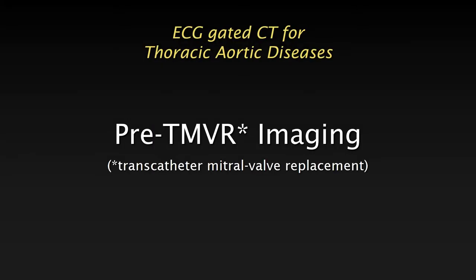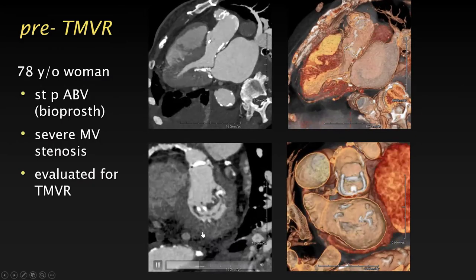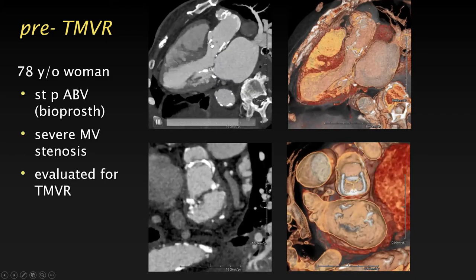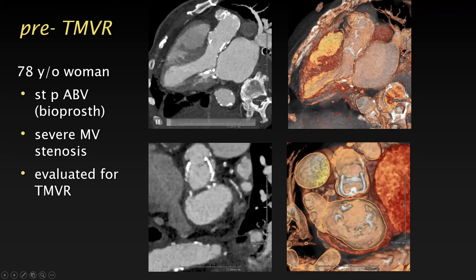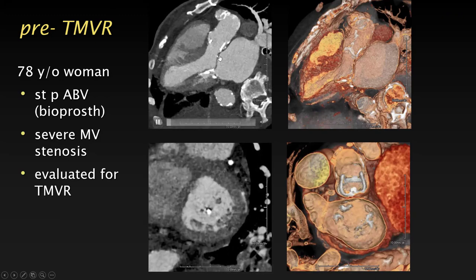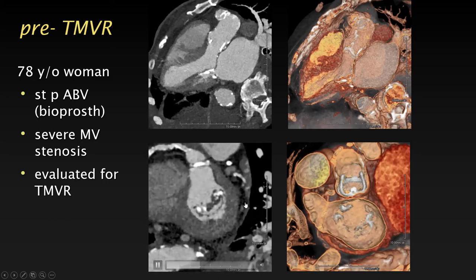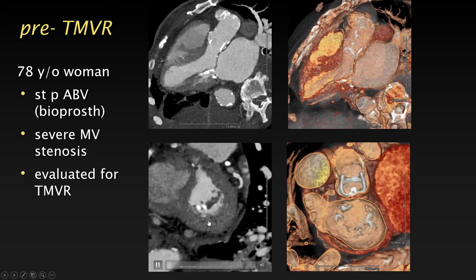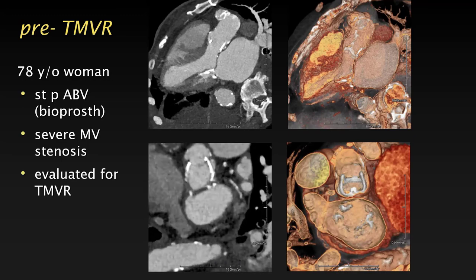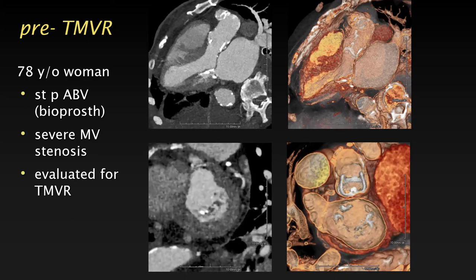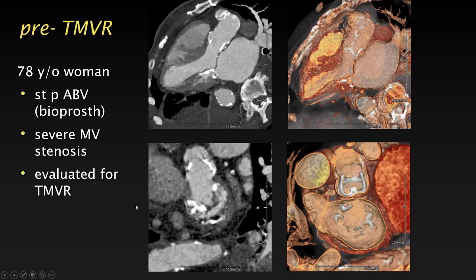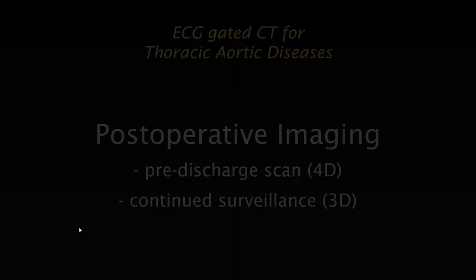Pre-transcatheter mitral valve replacement planning is even more sophisticated and difficult, but the principle is the same — you need a very high-quality study. Here we typically scan in 20 phases over the cardiac cycle. In this patient the anterior mitral leaflet should open like a gate, but it's totally stuck and the valve opening is a very tiny slot — severe mitral valve stenosis. The planning for mitral devices is more complex because the devices themselves are more complicated and must fit precisely within the mitral valve.